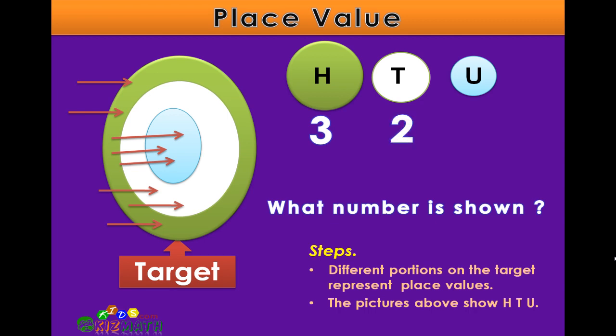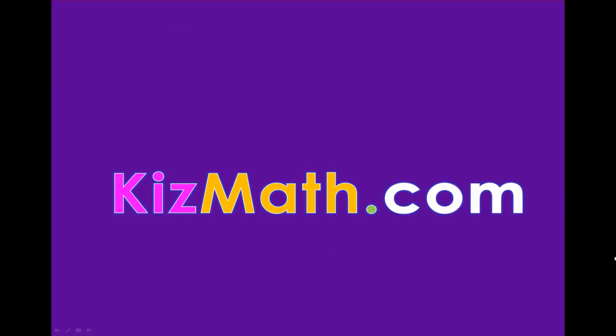Two in the white section or the tens, and three in the blue section or the units. This gives us the number 323. This is the end of the lesson, brought to you by kidsmathgames.com.